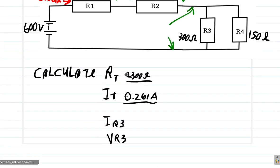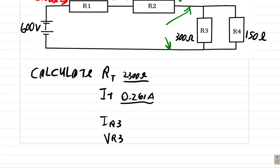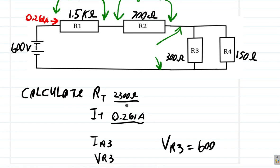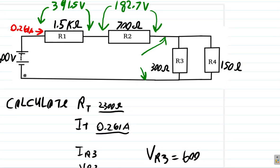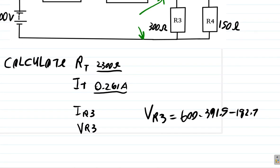So here now, the voltage. Let's calculate the voltage drop first. The voltage drop across R3 is going to be 600 minus, what was it again? 391.5, minus 391.5 volts, minus 182.7 volts. What will that give us?